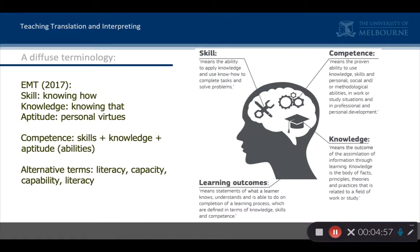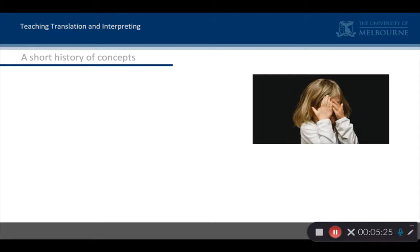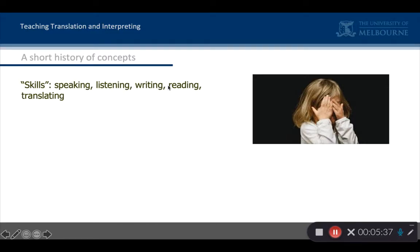Competence brings together those three things. It can also be called literacy, capacity, or capability to do something. People move on to these terms because the waters have become muddied — it becomes difficult to know exactly what competence means. This is true in language education as it is in translator training. Let me take you through a short history of the concepts. In language education, traditionally back in the 19th century, skills were speaking, listening, reading, and writing — those were your four skills. We might like to add mediation or translating to them.